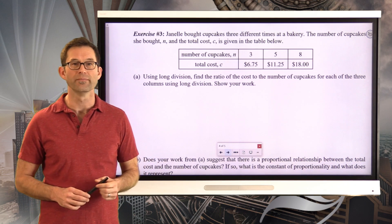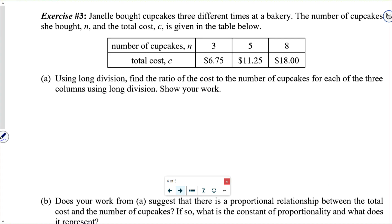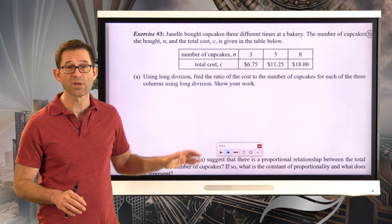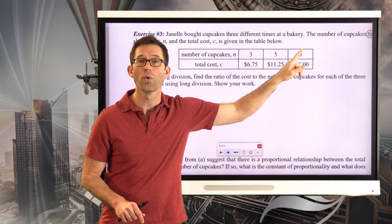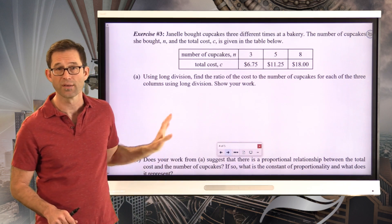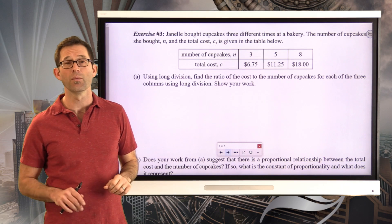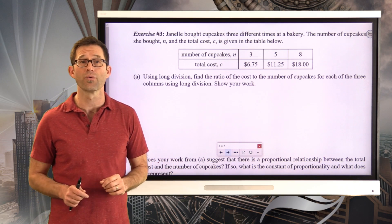And we'll see speed a lot in this course because it's a great example of the ratio of distance to time. Anyhow, let's take a look at another exercise. Exercise number three. Janelle bought cupcakes three different times at a bakery. The number of cupcakes she bought, n, and the total cost, c, is given in the table below. Letter A asks us to use long division, find the ratio of the cost to the number of cupcakes for each of the three columns using long division. Show your work. So, I'd like you to do this on your own, but use long division to find the ratio of the cost to the number of cupcakes in each one of those examples. So, you should have three long division problems. See what you get for each.